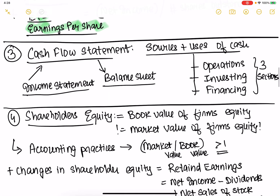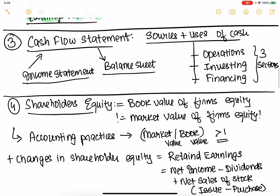The cash flow statement has three parts: cash flow from operations, cash flow from investing, and cash flow from financing. Cash flow from operations is your day-to-day operations to run your business. Cash flow from investing is when you buy new property, plant, and equipment. Cash flow from financing is whether you're raising money through debt or equity. If you add all of this up, you get net cash. The cash flow statement is related to the balance sheet and income statement.